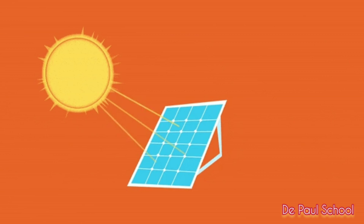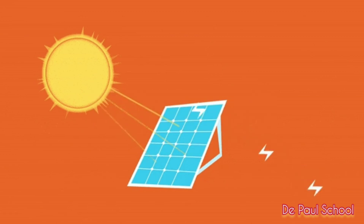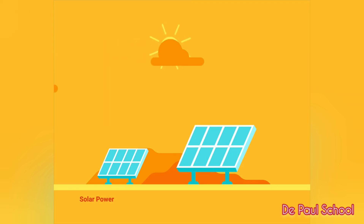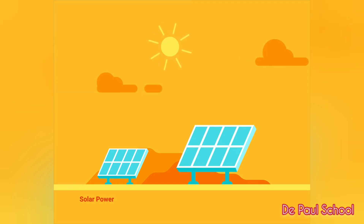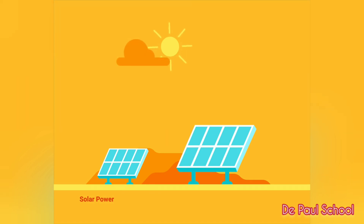Now the third form of energy is solar energy. As the word implies, solar means sun. The sun is the main natural source of energy on Earth. Sunlight passes through the Earth's atmosphere in the form of visible light and infrared radiation.